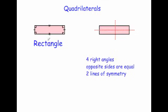A rectangle has four right angles, just like the square, but this time only the opposite sides are of equal length. The top and the bottom will be the same length, and the left-hand side and the right-hand side will be equal. This shape only has two lines of symmetry: a vertical line of symmetry and a horizontal line of symmetry.